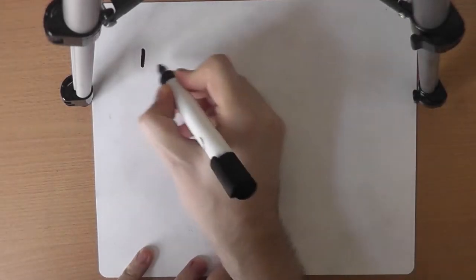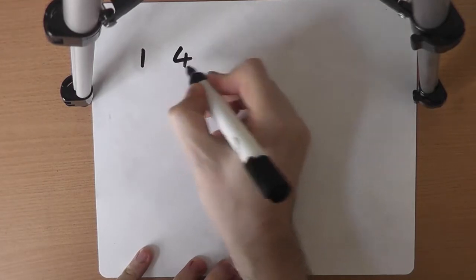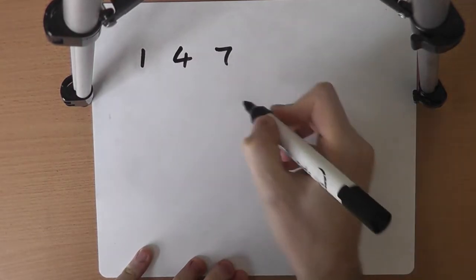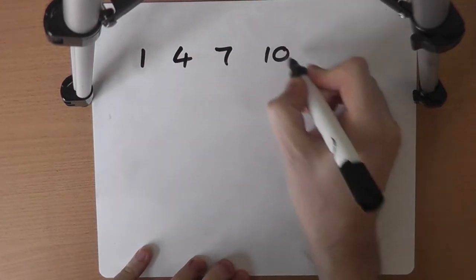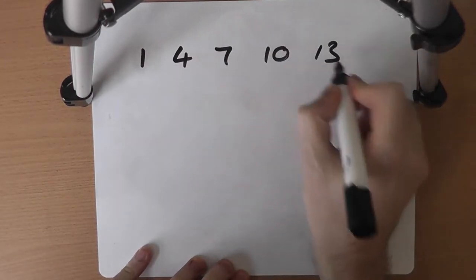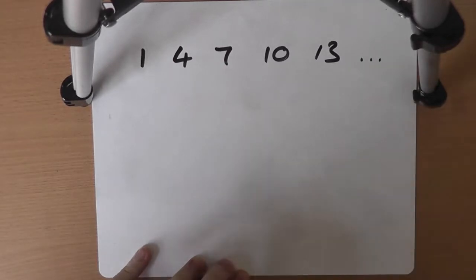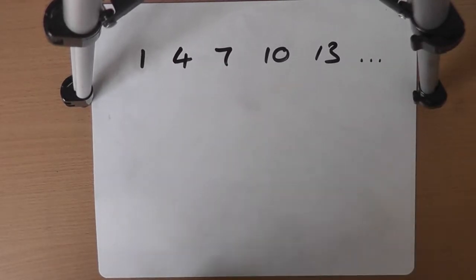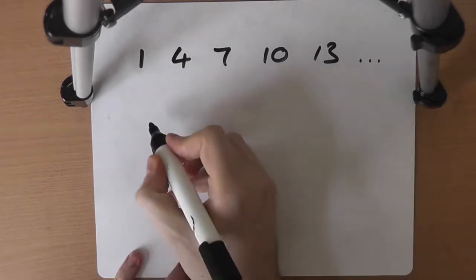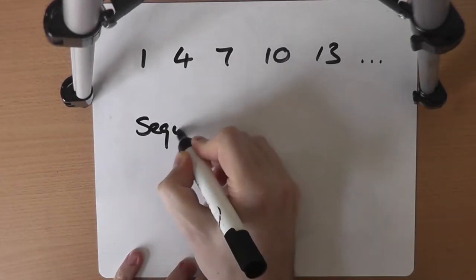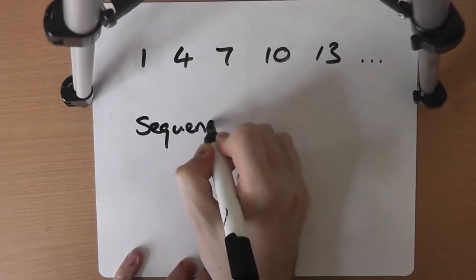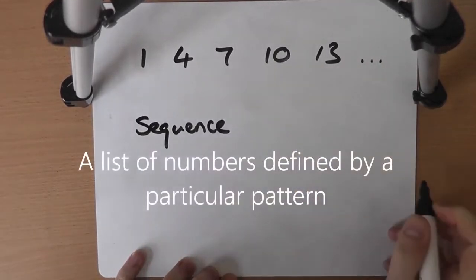For example: 1, 4, 7, 10, 13, and so on. There is a clearly defined number pattern. In fact, that is a sequence — a list of numbers defined by a particular pattern.